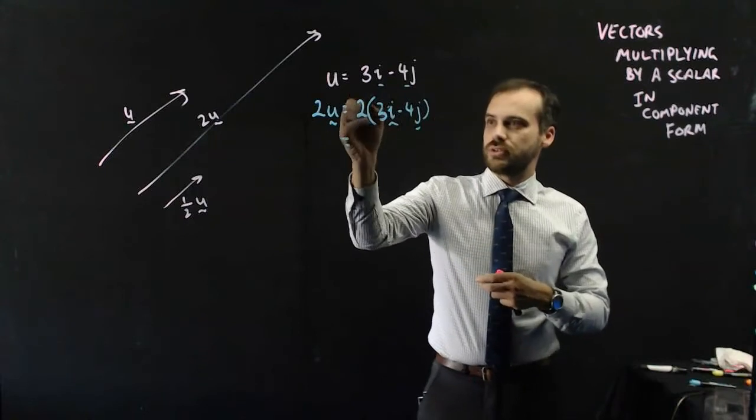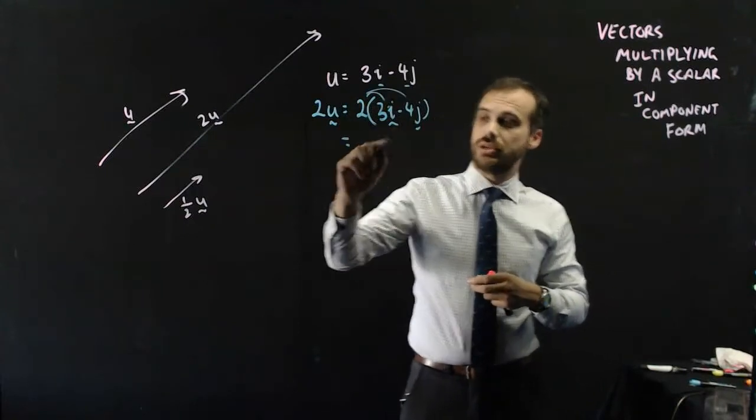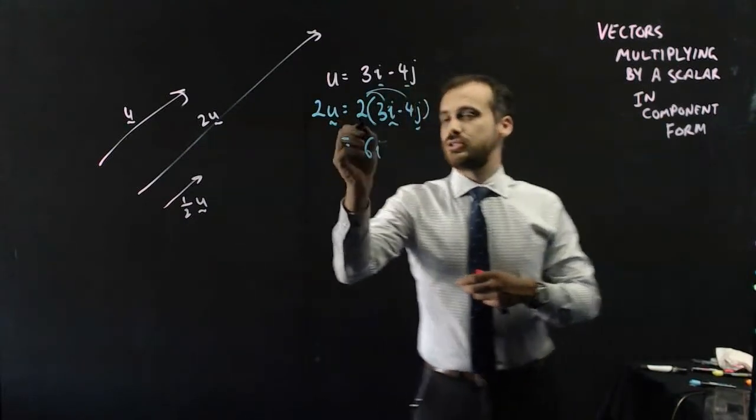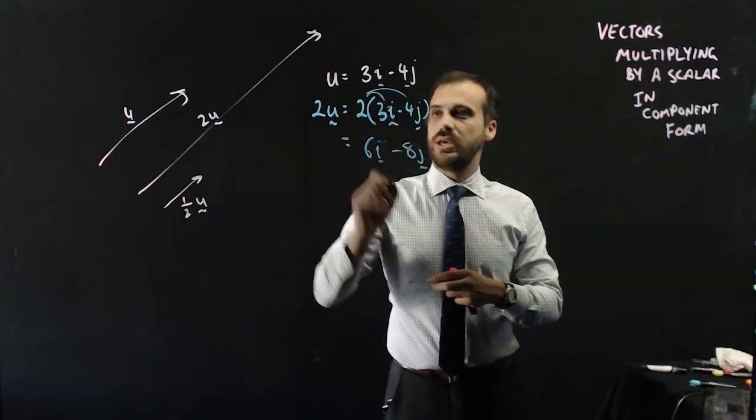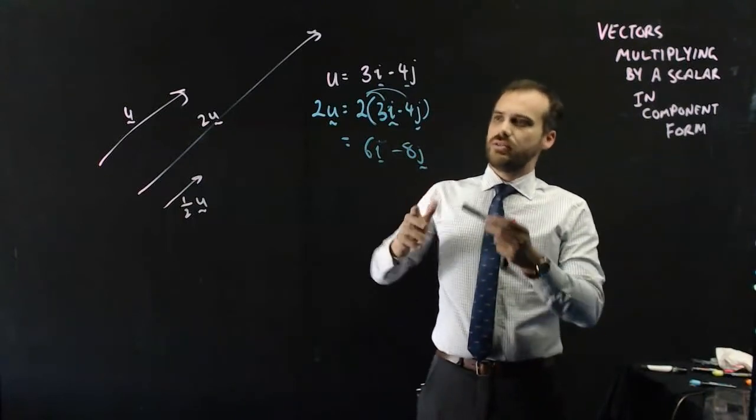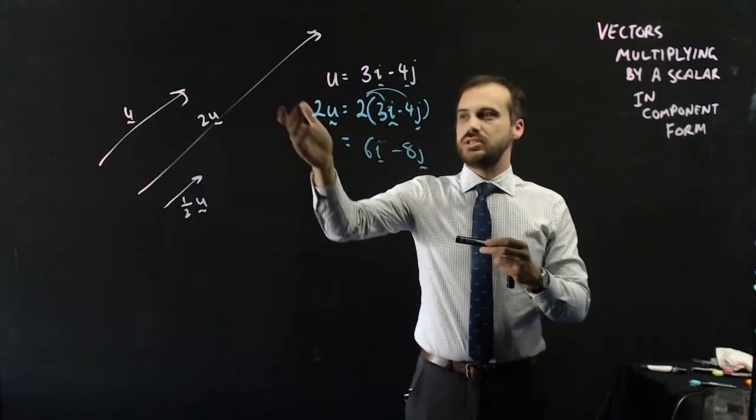Okay, so distributive law, 2 times 3i is 6i, 2 times negative 4j is negative 8j, and we have our answer. A vector that is twice as long as u is 2u.